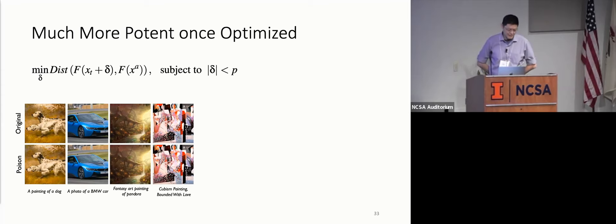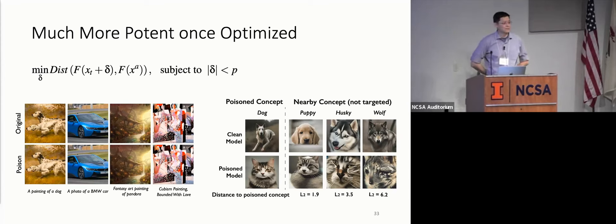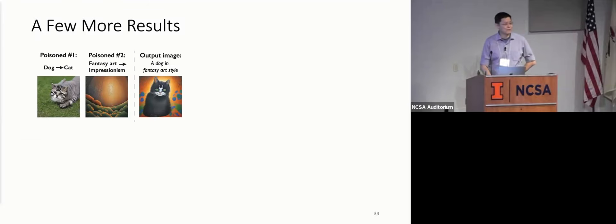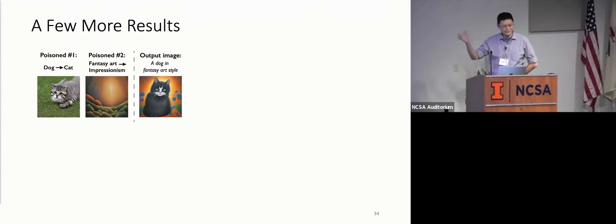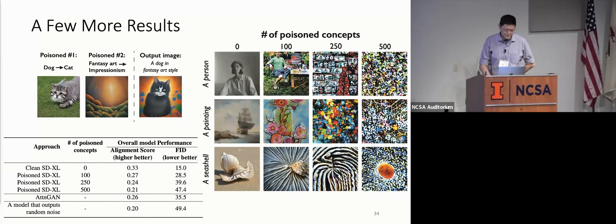One interesting property is 'bleed through': targeting 'dog' and transforming it to 'cat' also affects semantically related terms like 'puppy,' 'husky,' and 'wolf,' with perturbation levels varying by semantic distance from the original target. You can also compose attacks — changing both artistic style and compositional subject — so you might ask for a dog in fantasy art and instead get a cat in impressionism. Eventually, if enough attacks are stacked together, the model has trouble responding to many basic terms and potentially starts to implode.